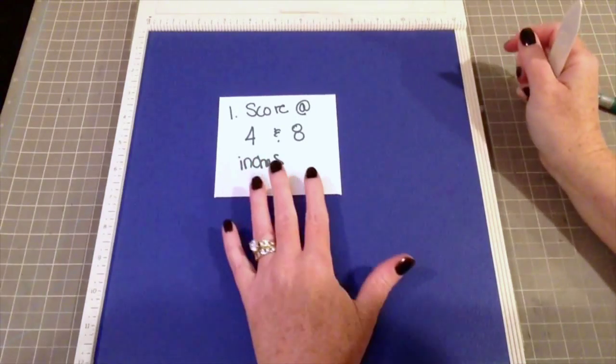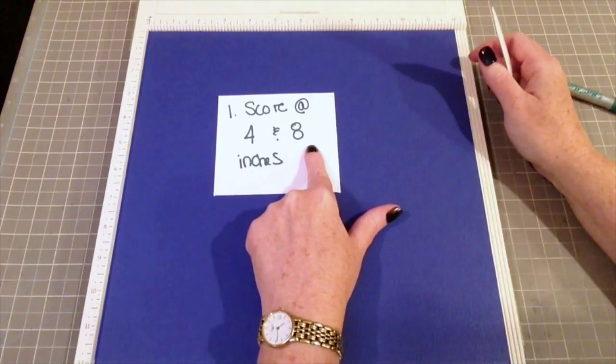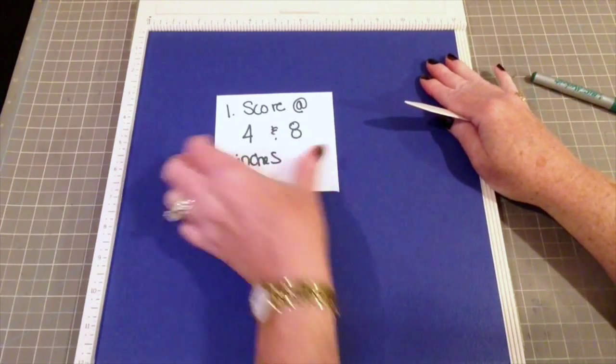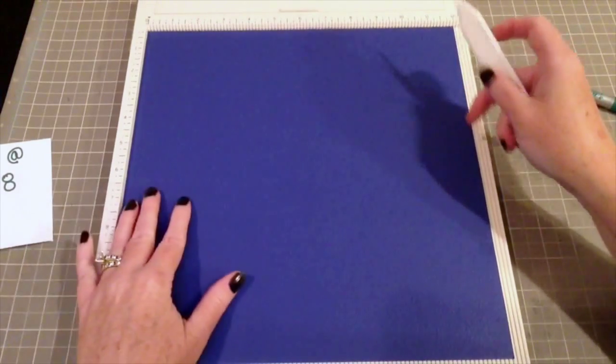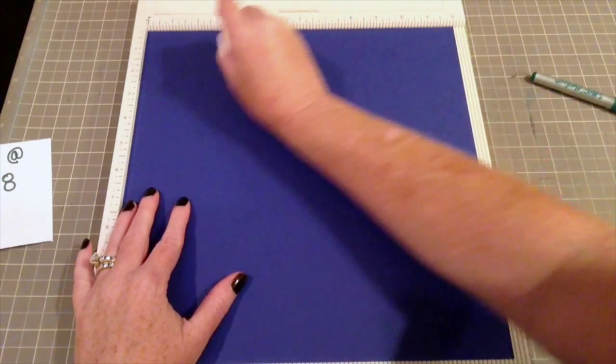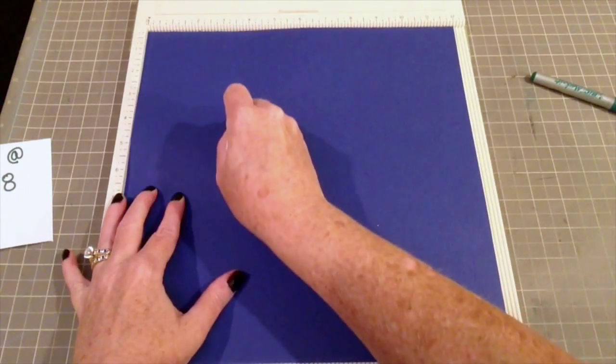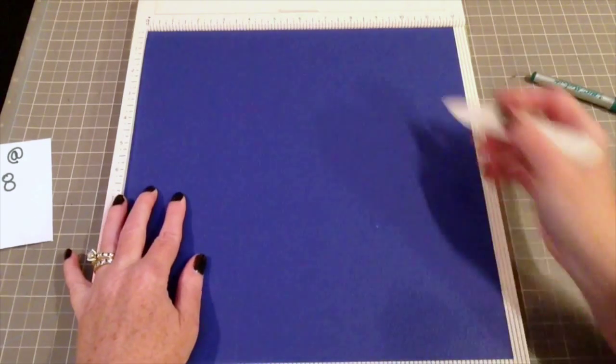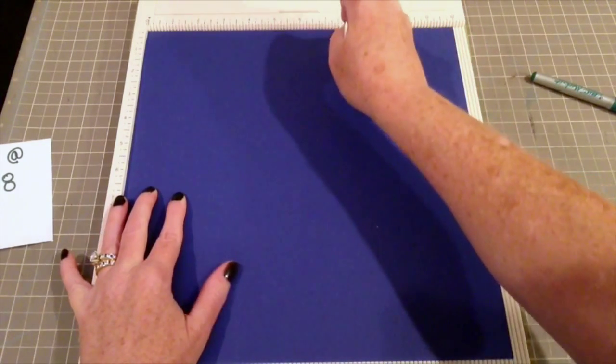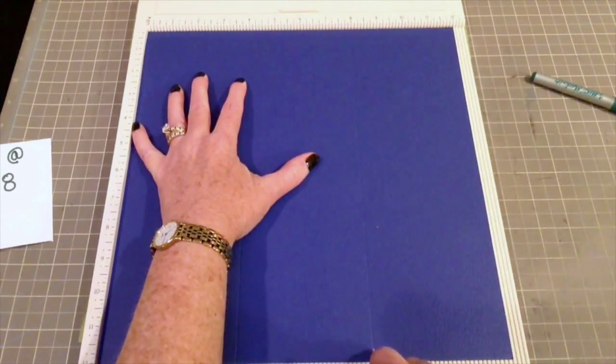What you're going to do is score your sheet at the 4-inch mark and then the 8-inch mark. So you'll make those two score lines going down. You start at the 4-inch mark and go all the way down, keeping the paper as still as you can so you get a nice straight line. Then you go to the 8-inch mark and go all the way down.